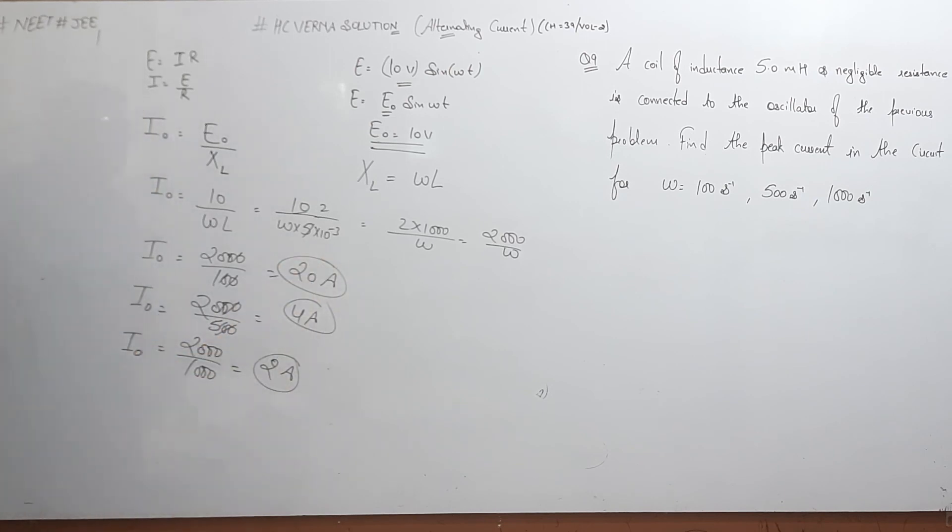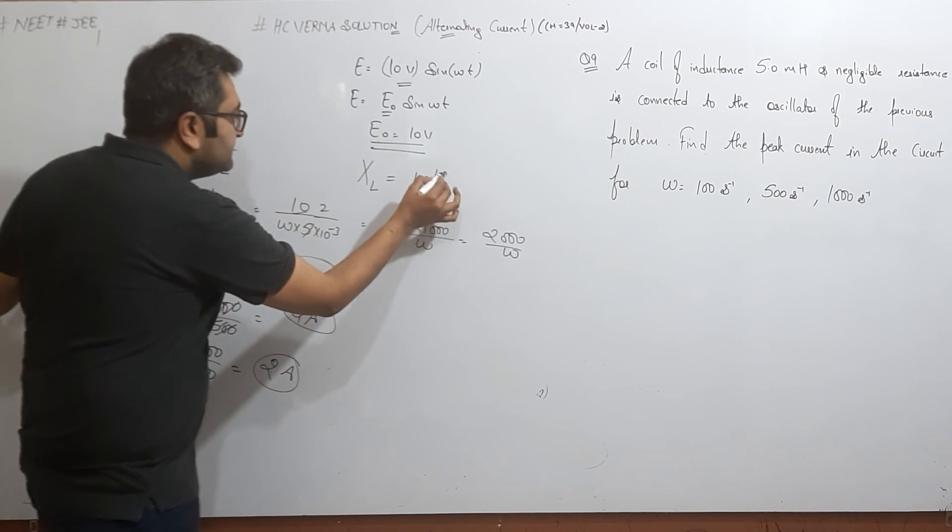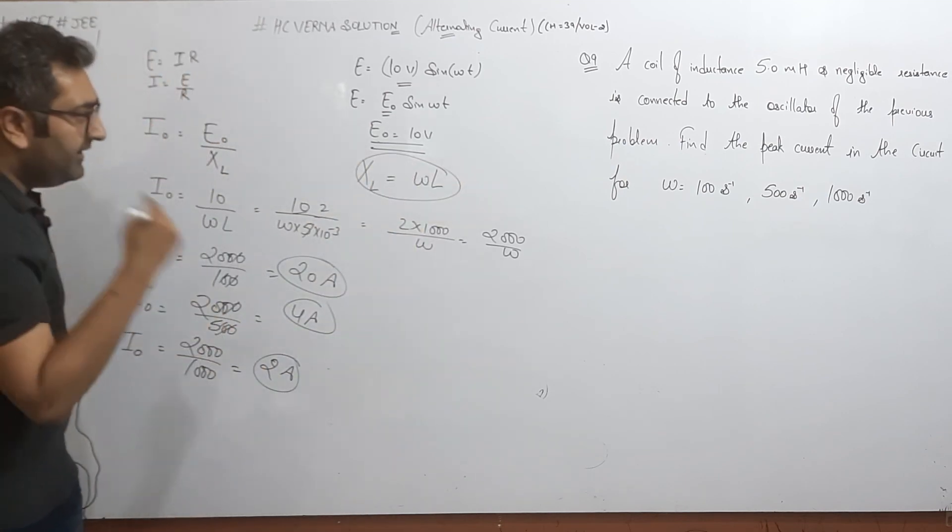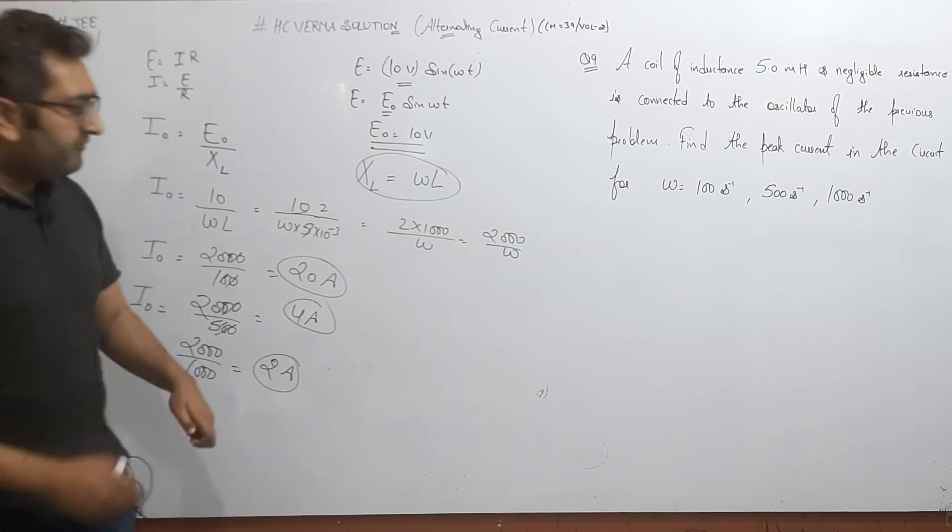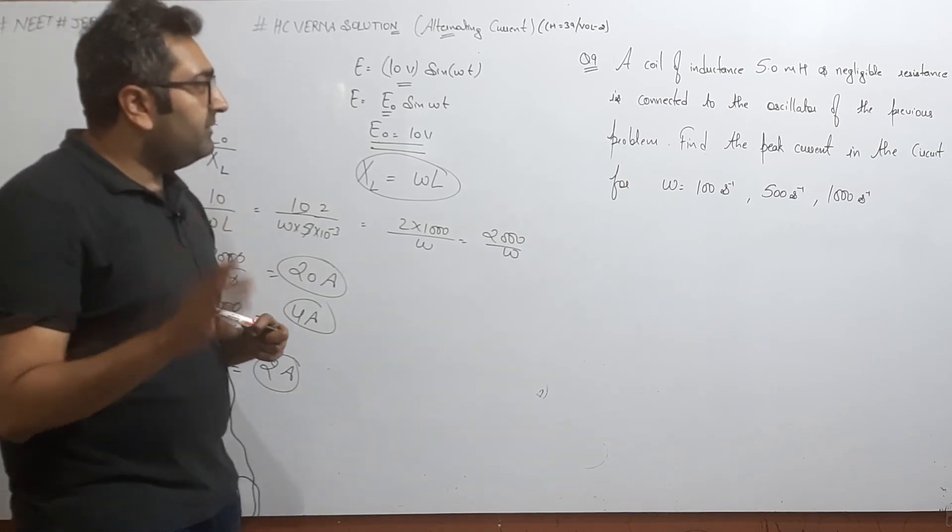These are three answers for different frequency values of peak current. Samajhna kya aata ho, just resistance by inductor, inductive reactance. Hope problem clear hoga. Phir bhi koi doubt hai, comment karne, comment box mein aap.